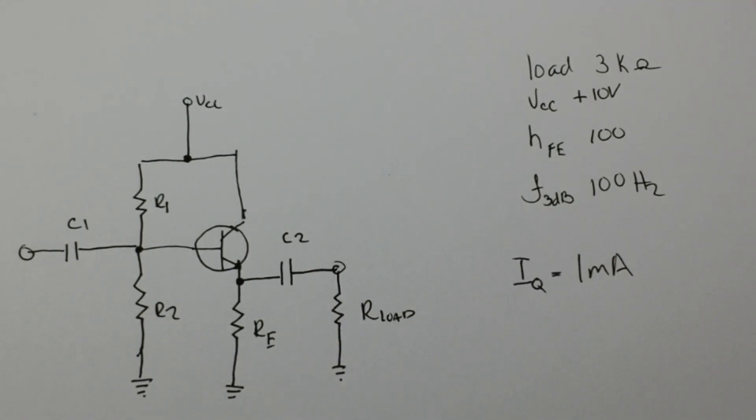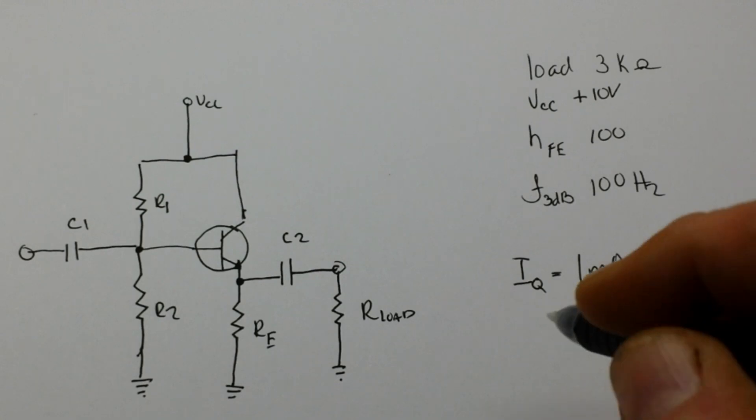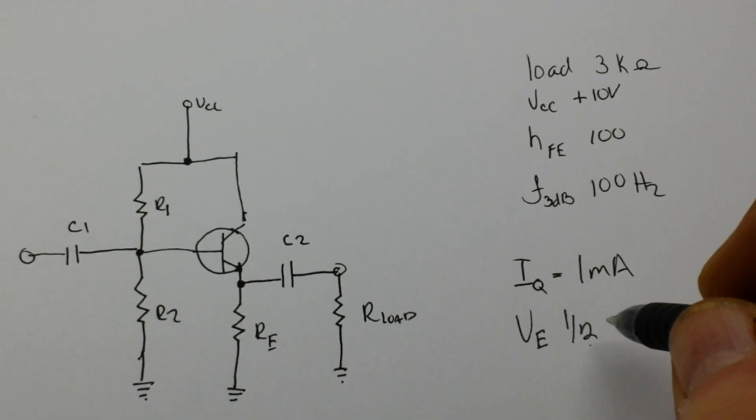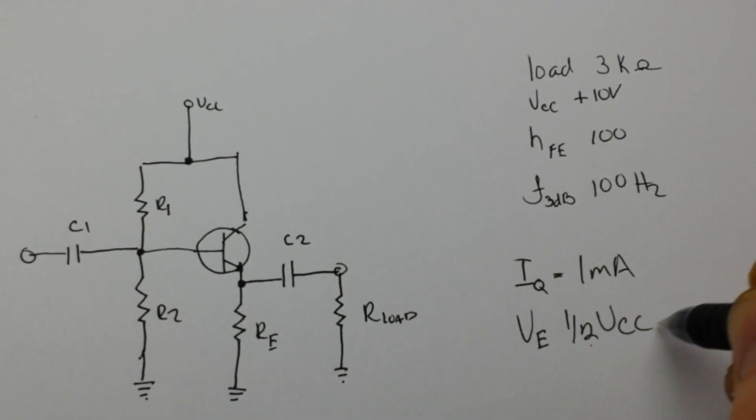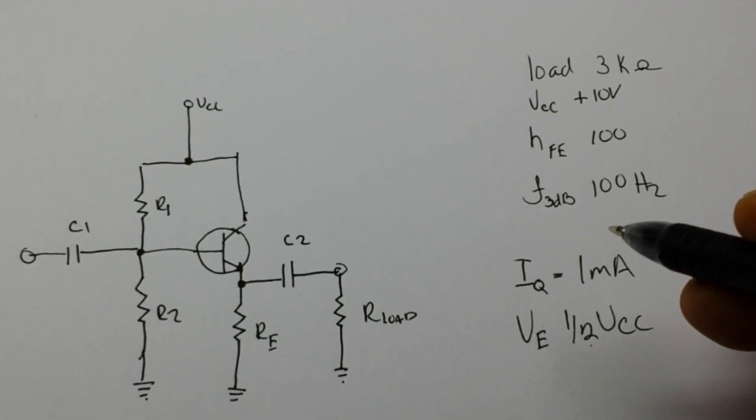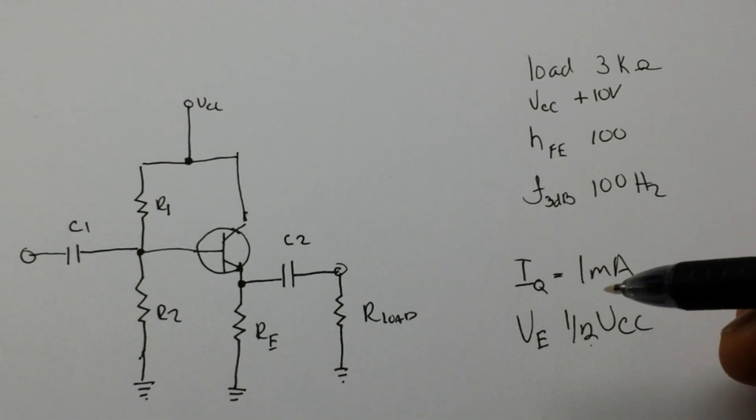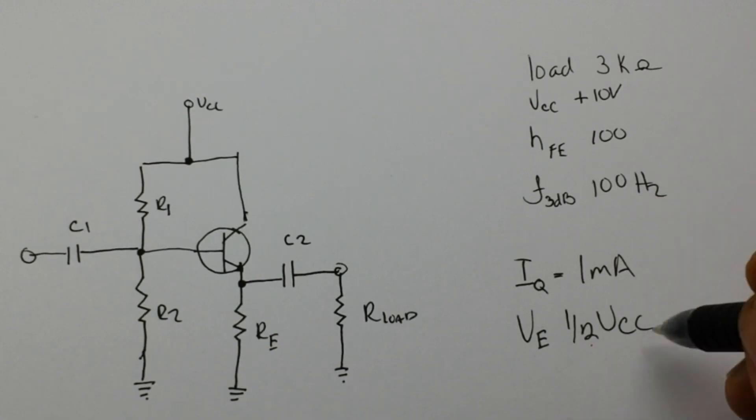Next we need to select our VE, that is our voltage at the emitter. And our VE we want to be one half of VCC. That will allow us the largest possible symmetric output so it can swing symmetrically both ways without clipping. So in this case that is going to be five volts.